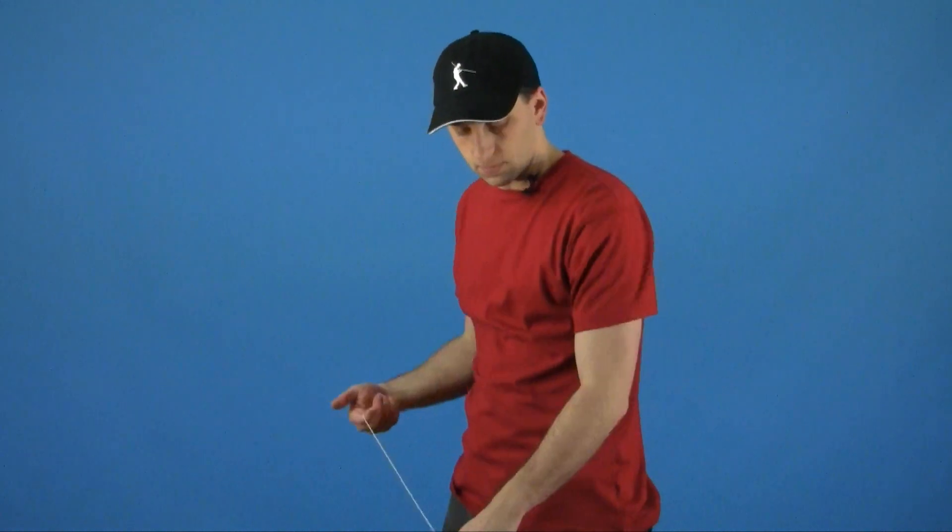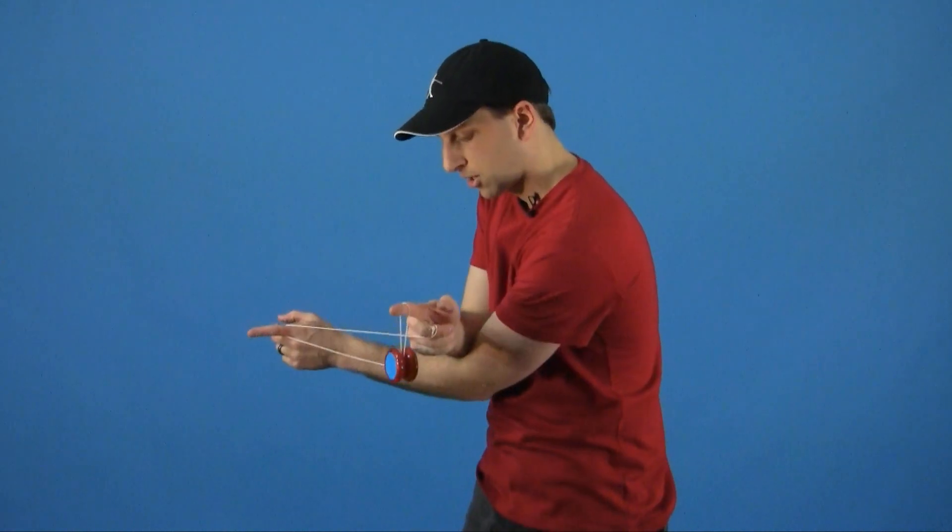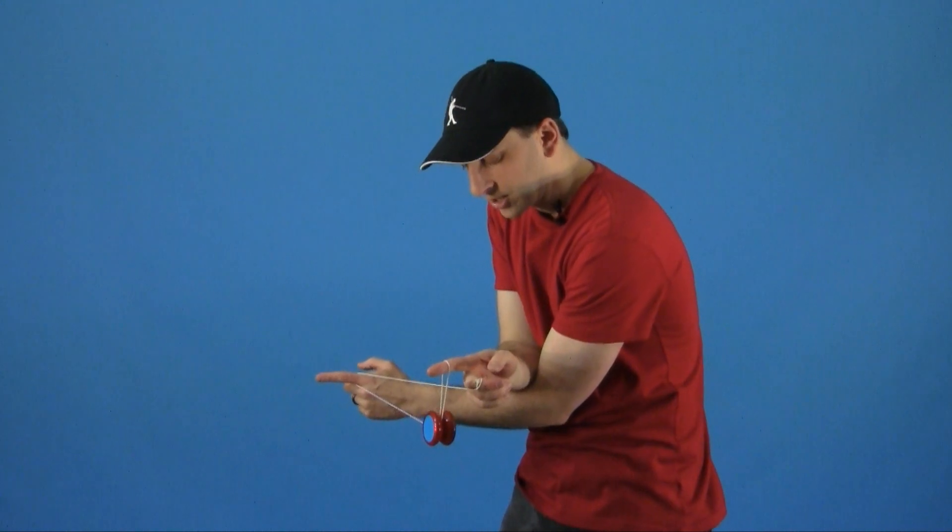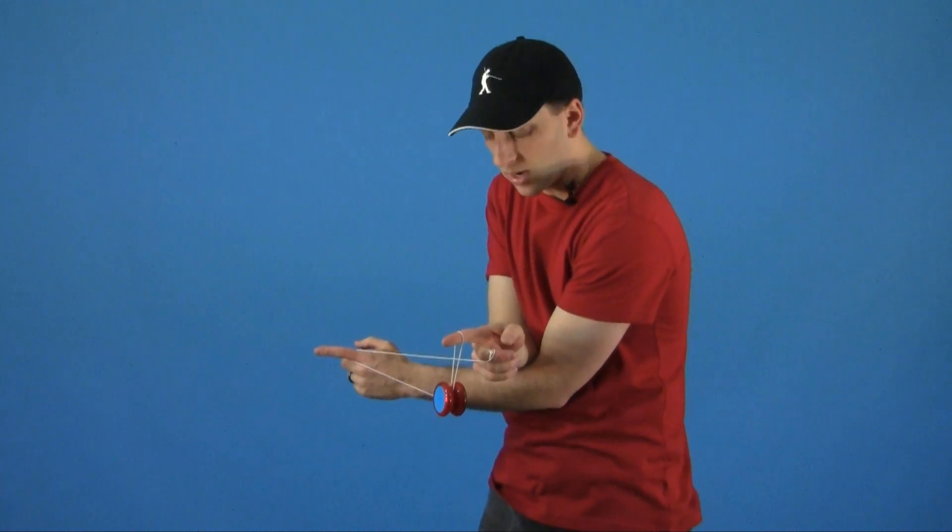The first hop is probably the most difficult, and that is where you go from your single to your one and a half. Just go from your single and you are going to cross your hands and catch it, and now you are actually in a one and a half mount.